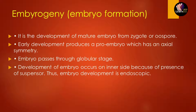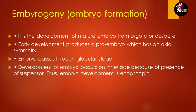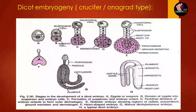The globular stage means the embryo divides into cells — one cell divides into two, and two will divide into four. These kinds of divisions take place, which is why it is called the globular stage. The embryo development is also endoscopic in nature, because the development of the embryo occurs inside, due to the presence of the suspensor. It is therefore called endoscopic.